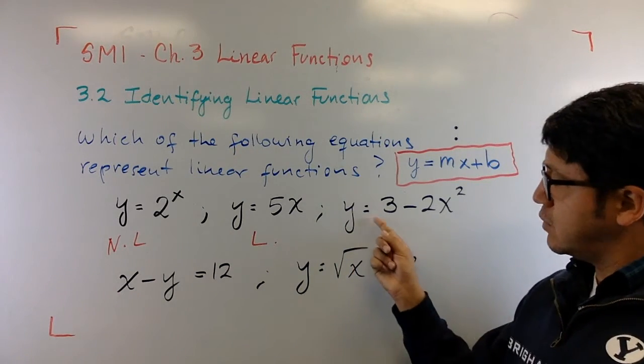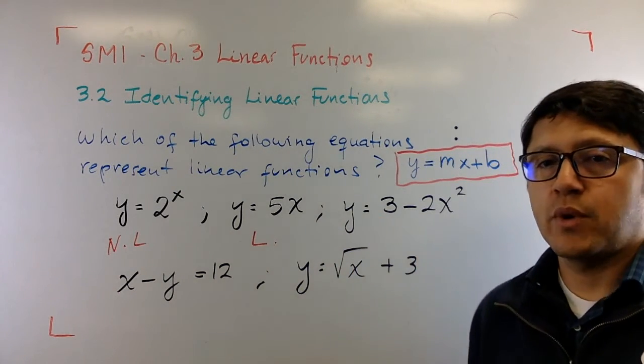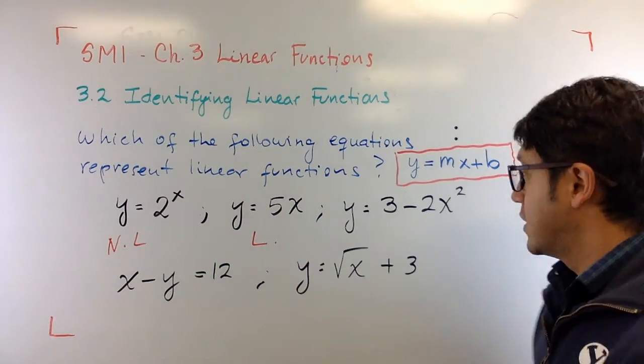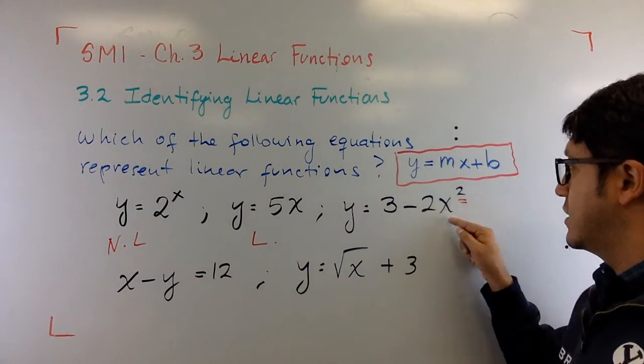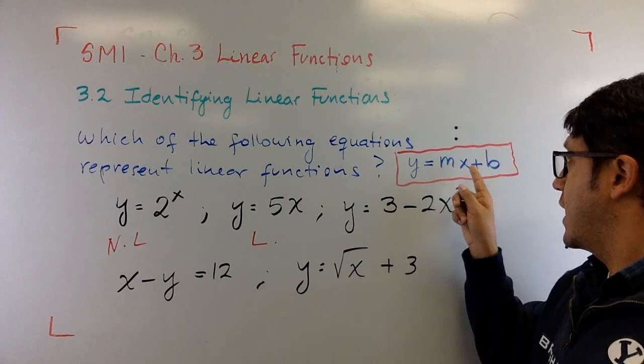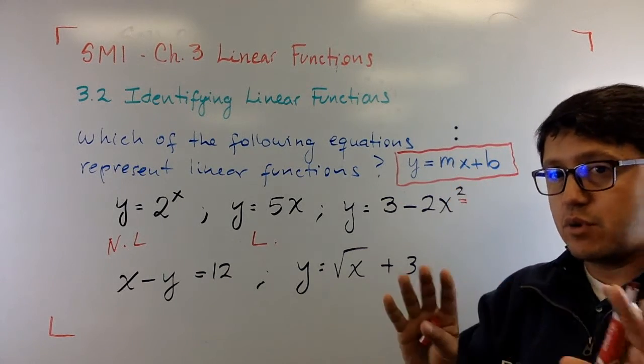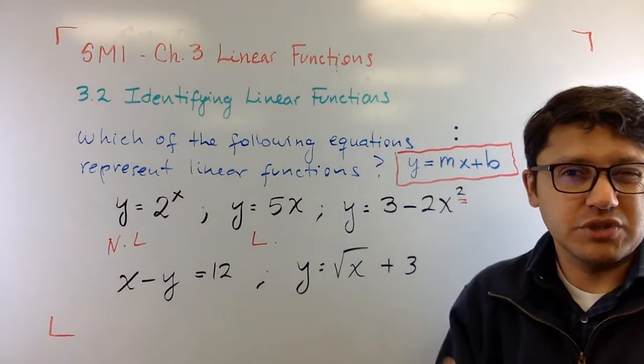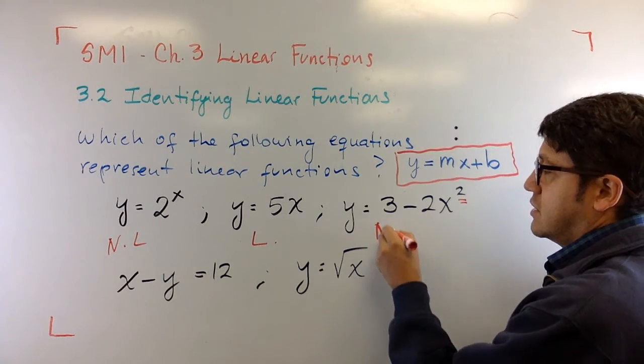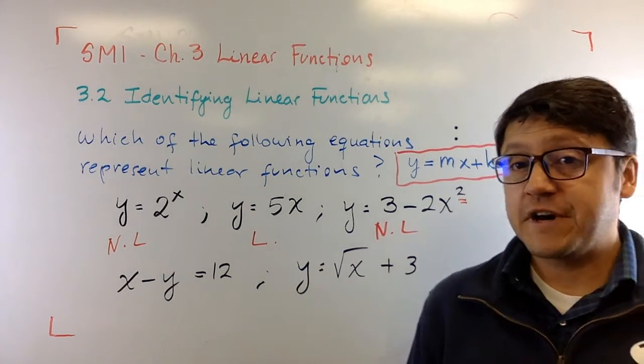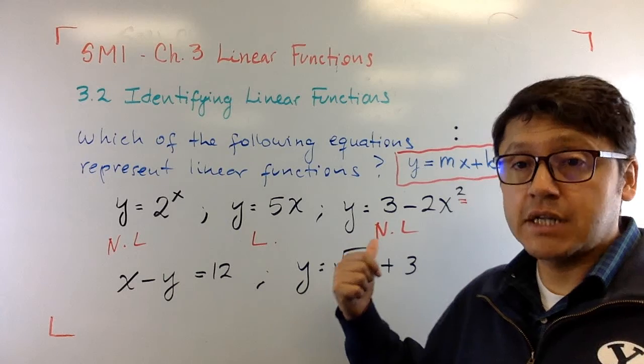Now, let's take a look at this one: y equals 3 minus 2x squared. Notice that x right here has an exponent 2, and right here we have no exponent—we have exponent 1, just to clarify. That means that this equation does not classify as a linear function, so it's non-linear.